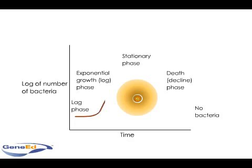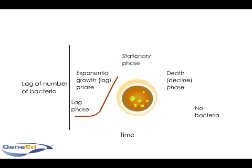Replication starts and rapidly continues during the second phase, termed the log or logarithmic or exponential phase. Bacterial cells undergo binary fission at a constant rate, and thus the number of bacteria increases logarithmically. That is, one bacterium divides into two, which replicate into four, which then produce eight, and each individual bacterium in the process replicates at a constant rate.